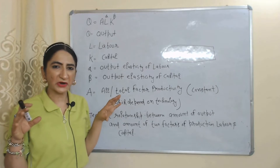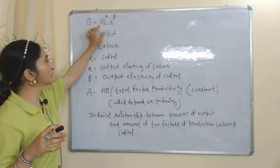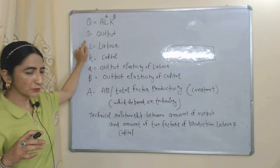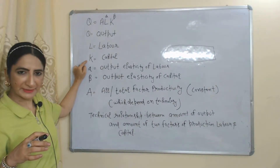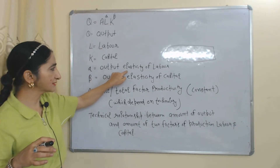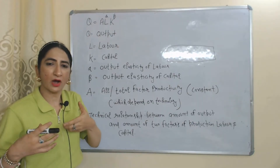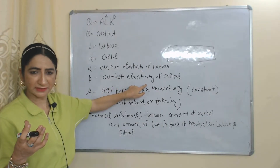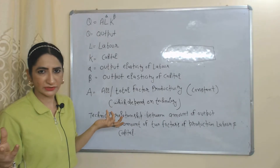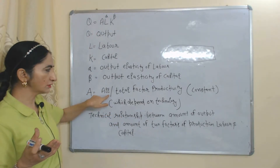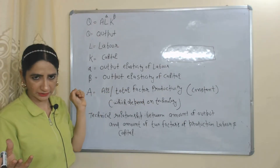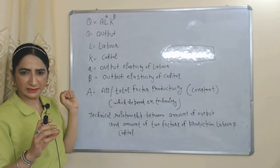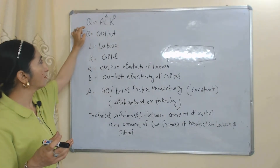Now we will see the equation of this production function: Q = A·L^α·K^β. Here Q is output, L is labor, K is capital. Alpha represents the output elasticity of labor — how much output changes when we change labor. Beta represents the output elasticity of capital — how much output changes when we change capital. A is the total factor productivity, which depends on technology, and here we assume A is constant.